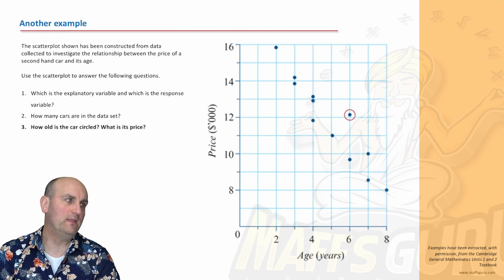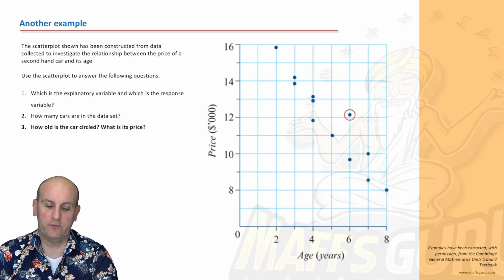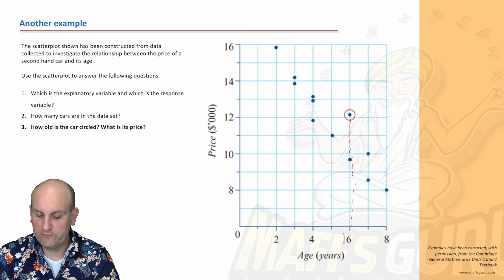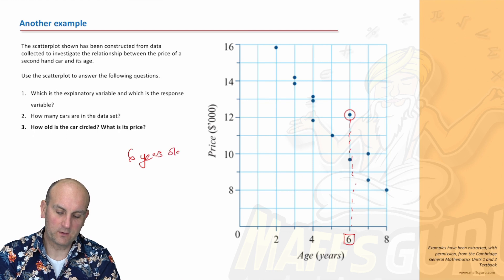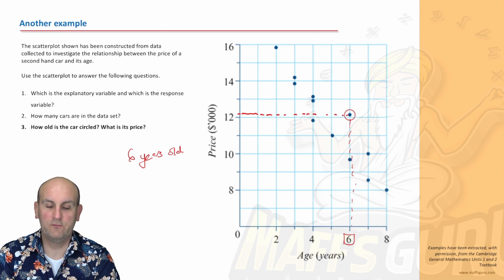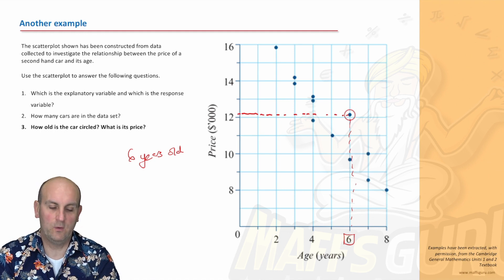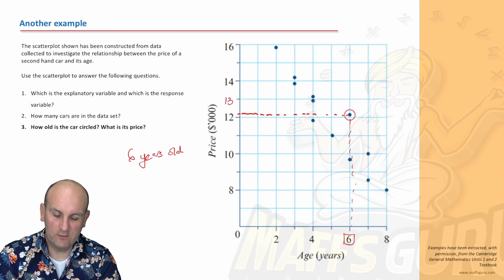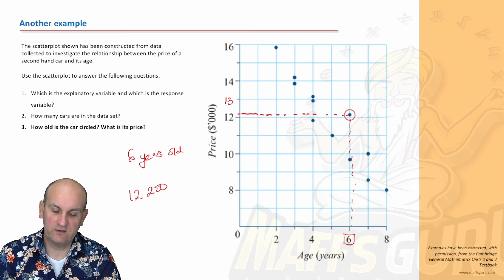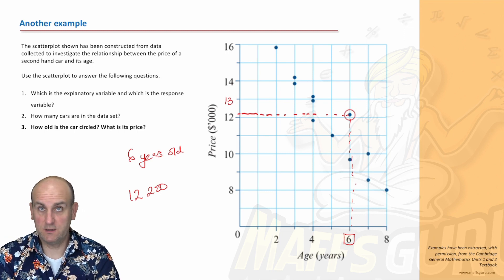How old is the car circled and what is its price? And believe it or not, in the textbook, either they've printed these dots slightly out of line or they've rounded it to the nearest $1,000. But how old is the car circled? Well, we read down and we see that it is in fact 6 years. So it's 6 years old. Now, I think in the textbook they've written that as $12,000. Now, either it's been mistyped, but that would be very hard for me to try and work out what that actual price of the car is. I would know that that value there would be $13,000. So maybe if we were going to be accurate, $12,200, maybe seems to be about a fifth of the way up. But on the whole, in an exam, they'll give you a much nicer graph to be able to do that. So that's doing it by hand.